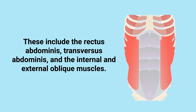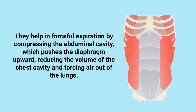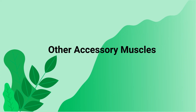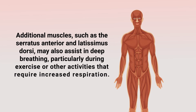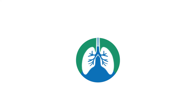The abdominal muscles — including the rectus abdominis, transverse abdominis, and the internal and external oblique muscles — help in forceful expiration by compressing the abdominal cavity, which pushes the diaphragm upward, reducing the volume of the chest cavity and forcing air out of the lungs. Additional muscles such as the serratus anterior and latissimus dorsi may also assist in deep breathing, particularly during exercise or other activities that require increased respiration.